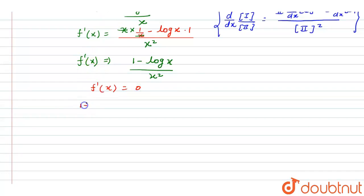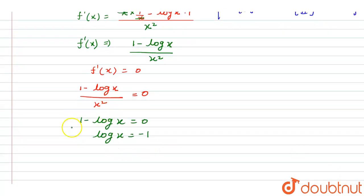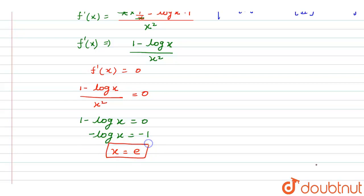We put f'(x) equal to 0, giving us (1 − log x) / x² = 0. From here, 1 − log x = 0, so log x = 1. Therefore x = e¹, which means x = e.